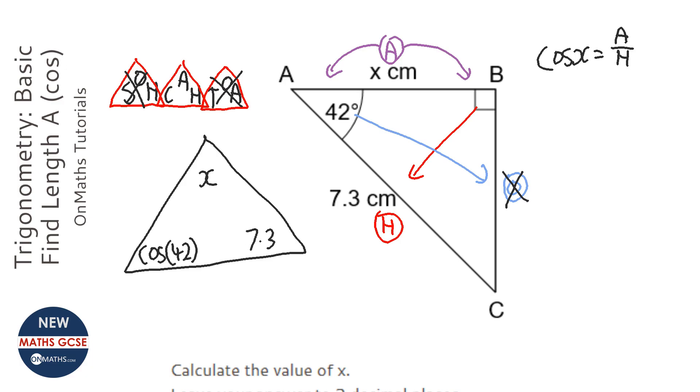Now the way of using this triangle is you times the ones at the bottom to get the one at the top. A little bit of a tip: what I always do is put the number in first and then times by cos, sine, or tan the angle. The reason for that is sometimes students forget to close the bracket before they times by 7.3.